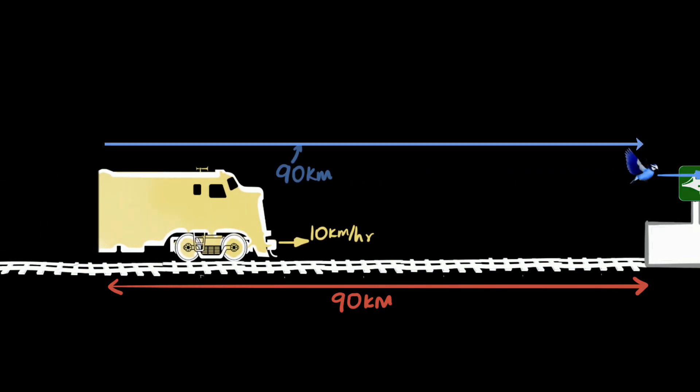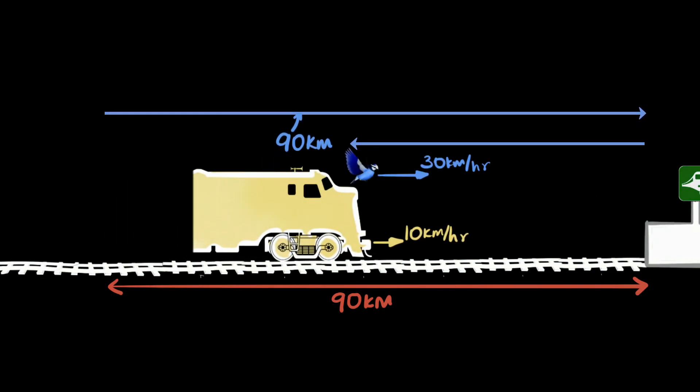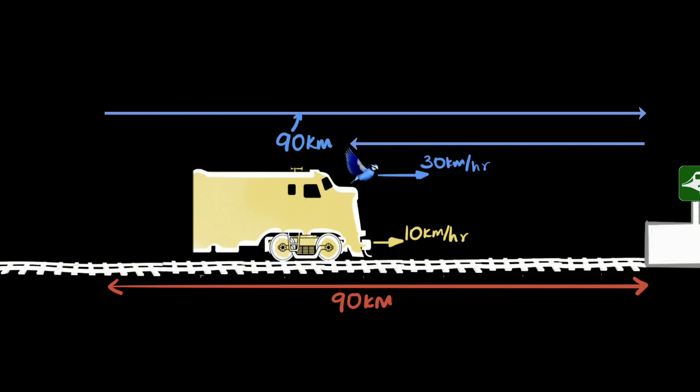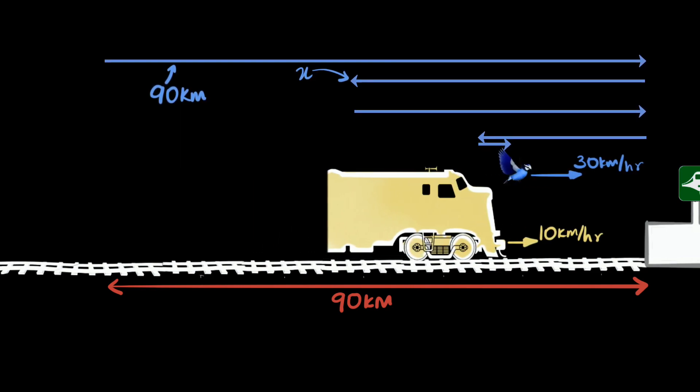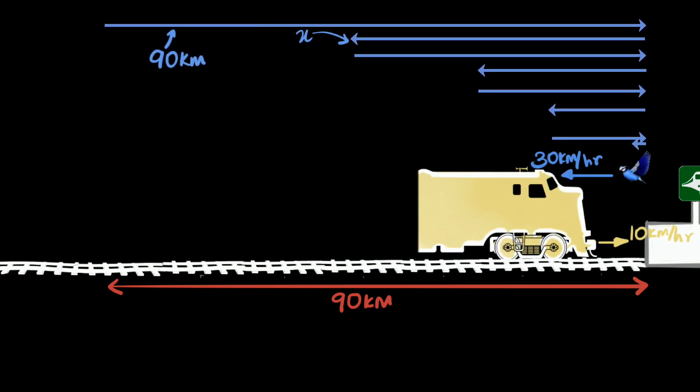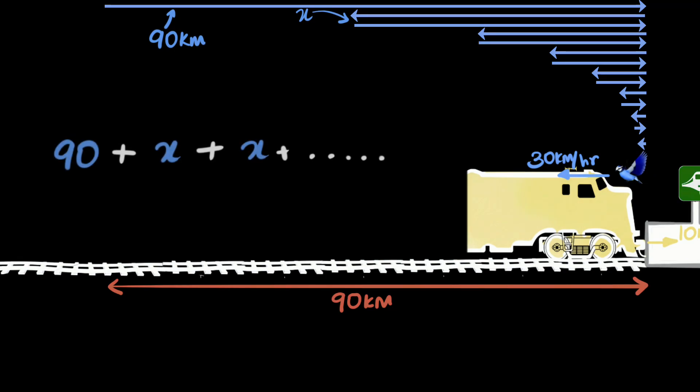That's easy, that's just the 90 kilometers. Then I have to figure out how much distance it travels in the second flight. And because the train also has traveled some distance, which I don't know, I will have to set up some variables and probably solve an equation. I think I can do that. And then continue doing that over and over again and keep adding it, which means I'm thinking some kind of a series summation is going to be involved.